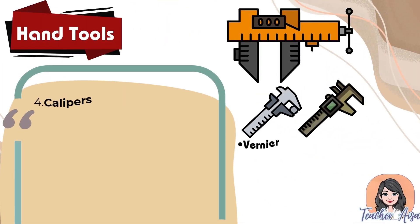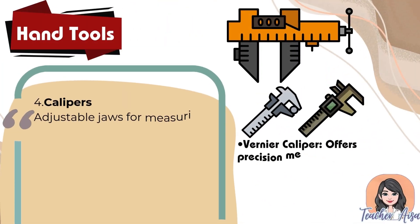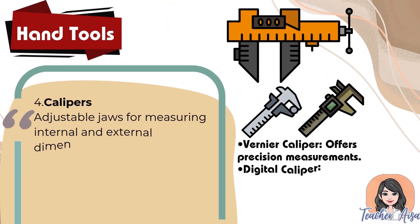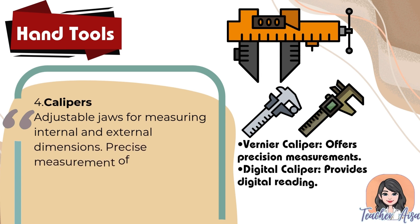Four: calipers. These have adjustable jaws for measuring internal and external dimensions, providing precise measurement of physical dimensions. Examples are: Vernier caliper, which offers precision measurements, and digital caliper, which provides a digital reading.